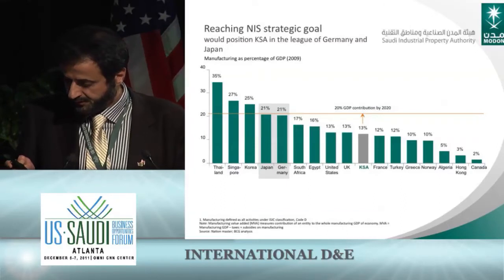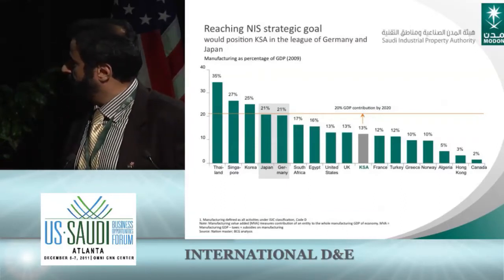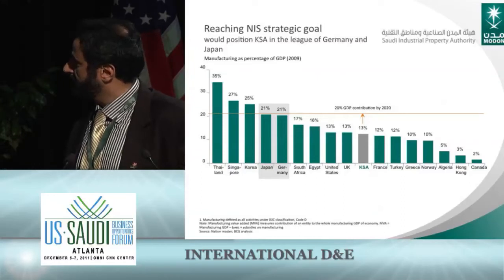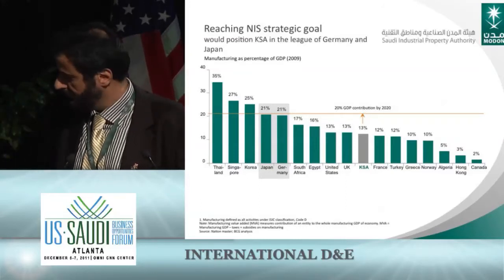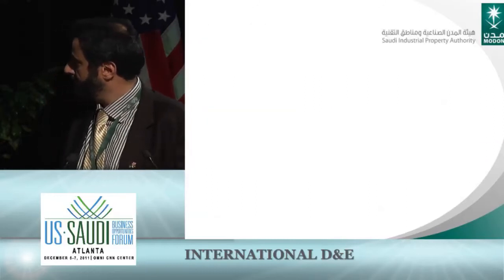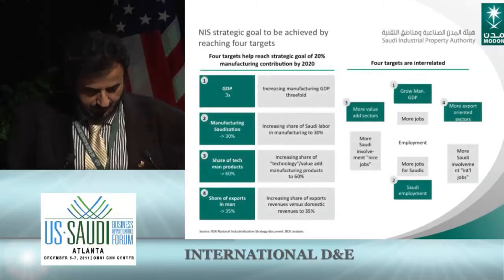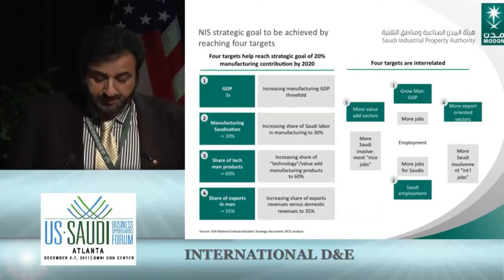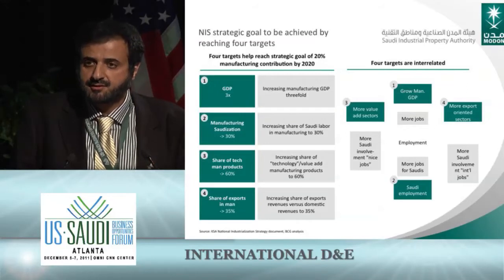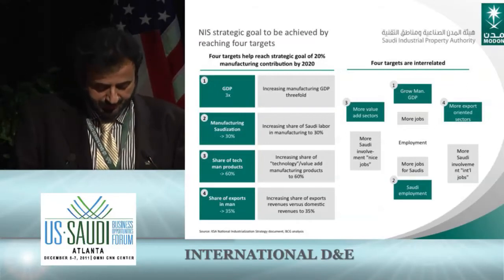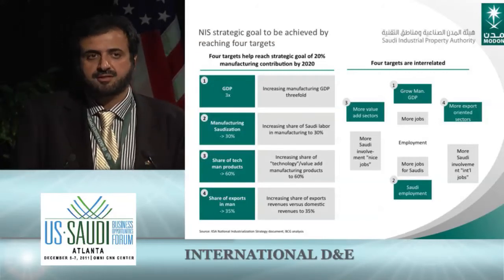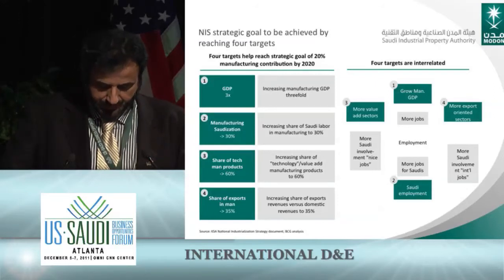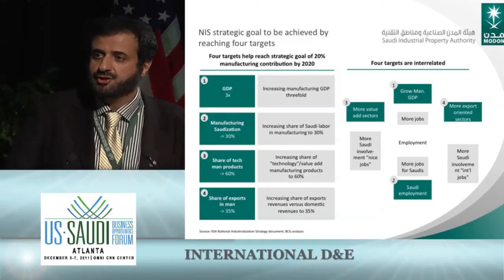As you can see, we are currently at 13 percent. By 2020, we want to be in the range of 20 percent, which is close to Germany and Japan. The purpose of achieving this target is to improve and create jobs for Saudis, to increase the amount of exports of locally manufactured products abroad, and to create more value-added jobs for the economy.